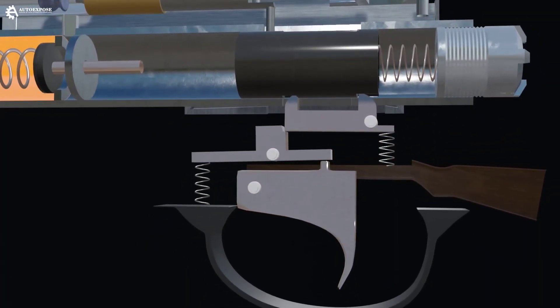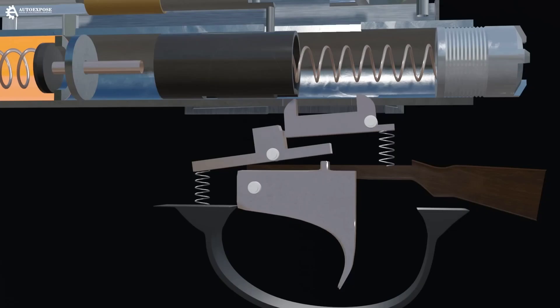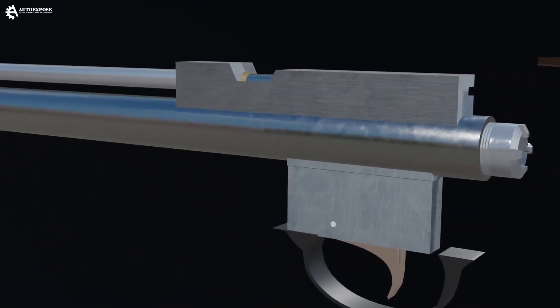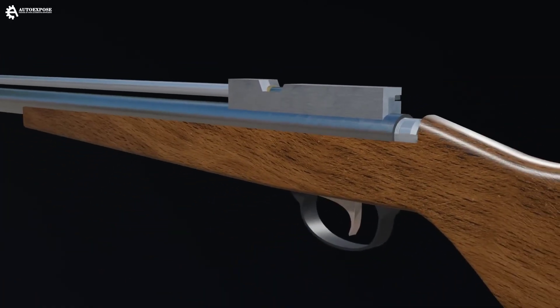Once the lever is positioned forward again, we just pull the trigger to shoot. That's an animation of how an air rifle works. Hopefully, this can increase our insight.